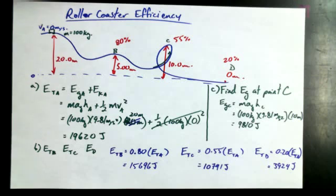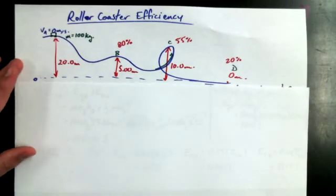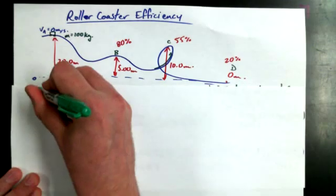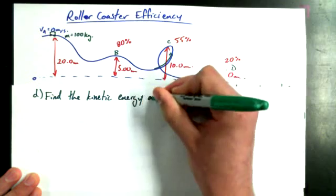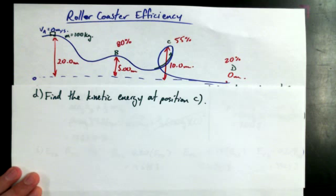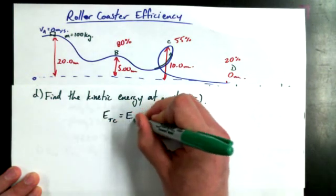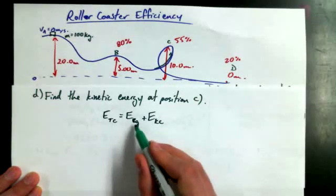So I want to shift over to a new sheet of paper. The next step, you can guess, what type of energy are we going to calculate next at position C? Kinetic. What part are we on? Part D. Find the kinetic energy at position C. Which total energy should we use? ETA, ETB, ETC, ETD? Position C, which total energy should we use? ETC. Is equal to EGC plus EKC. And we want to find EKC.